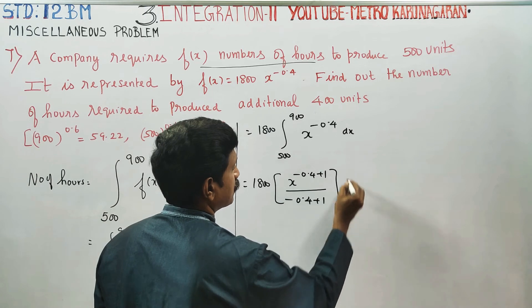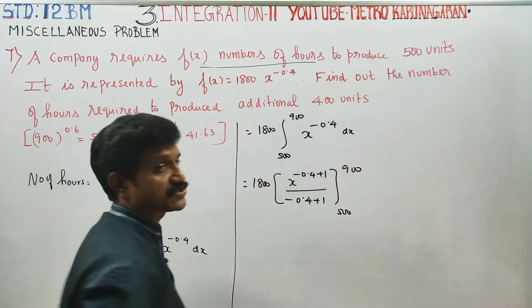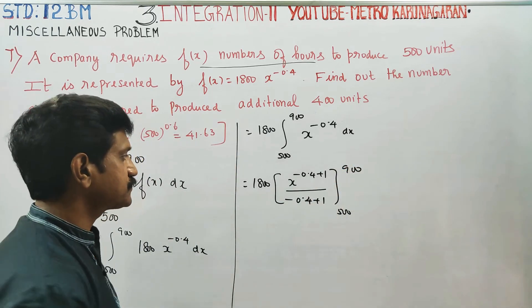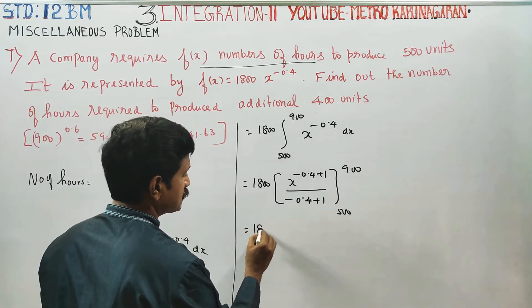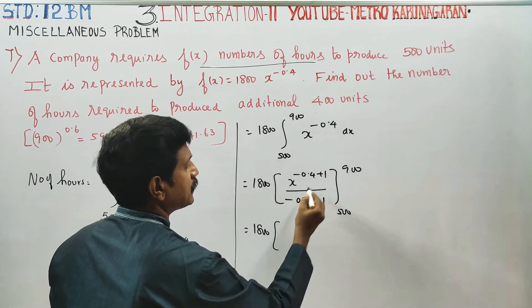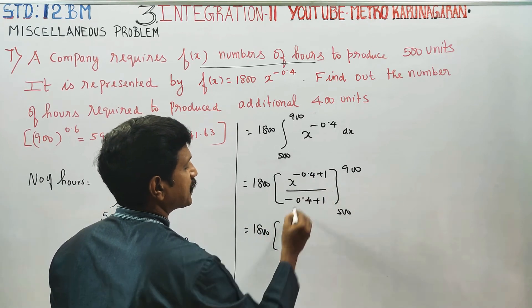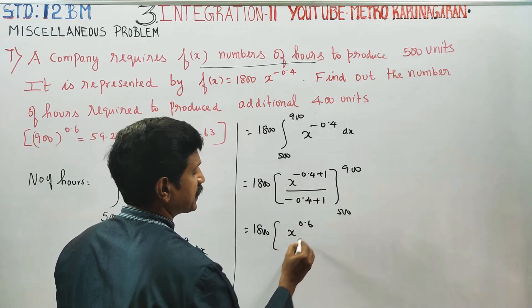Limits are 500 to 900. It is the integration formula. Next stage: 1800 multiplied by x to the power 0.6 divided by 0.6, with limits 500 to 900.